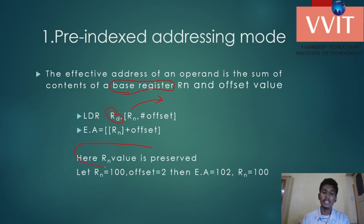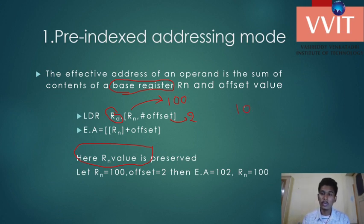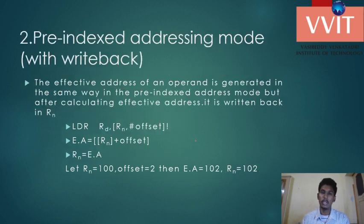Here, the Rn value is preserved — meaning the Rn value will not be changed. Consider an example where Rn is equal to 100 and offset is equal to 2. Then the effective address will become 100 plus 2, which equals 102. So 102 will be the effective address, and Rn will not change. Rn is preserved in the pre-indexed addressing mode.